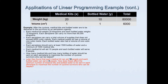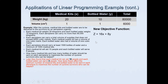We need to form the new objective function using the latest information. The new objective function is 16x plus 8y — 16x because each medical kit aids 16 people, where x represents medical kits, and 8y because each bottled water saves 8 people. So that's our new objective function.